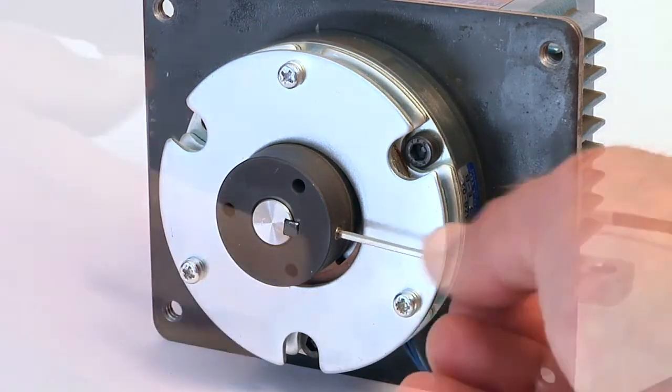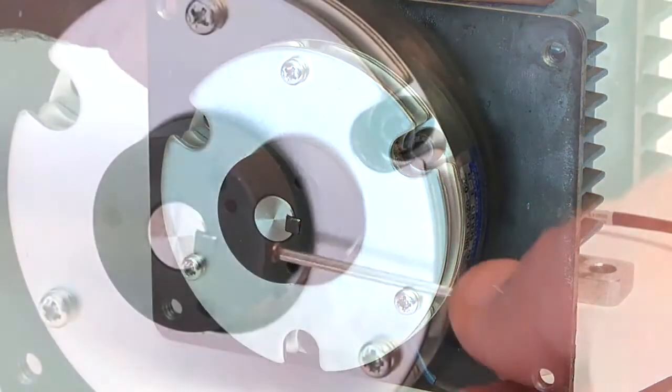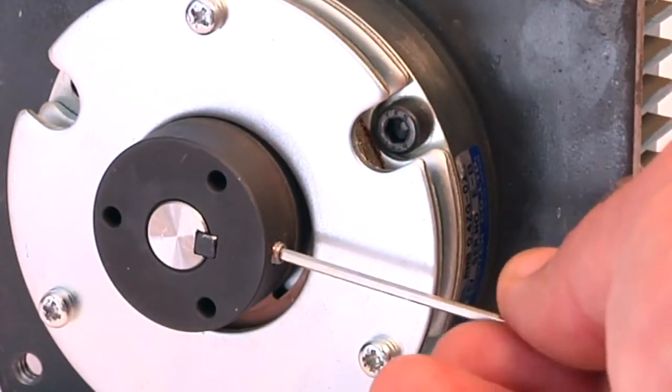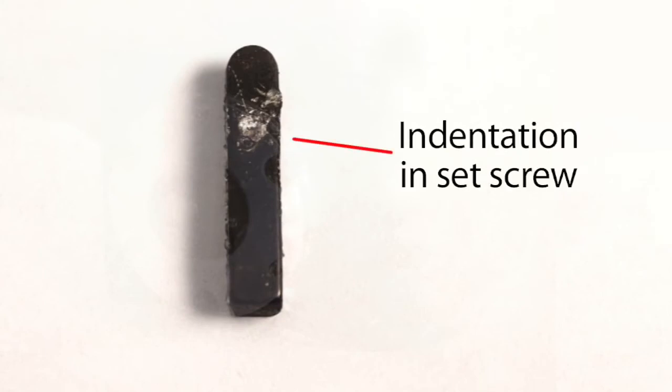If possible, try to slowly rotate the shaft. If any contact is noticed, release the set screw and try to reposition. To reposition the hub, the key may have to be moved if the set screw has caused an indentation.